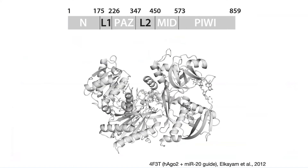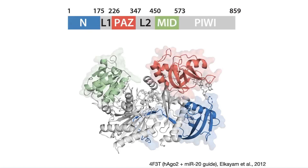Let me introduce you to the structure of Ago. This is Ago2 — our main human Argonaute — bound to a miR-20 guide. This is a crystal structure that was solved in my lab by Elad Elkayem, who served as a really great mentor for me. In this structure, we can see that Ago has these four main domains — all Ago proteins are part of an Argonaute superfamily and share this core domain structure. It consists of four main domains: the N, PAZ, MID, and PIWI domains, as well as two linker regions, L1 and L2.